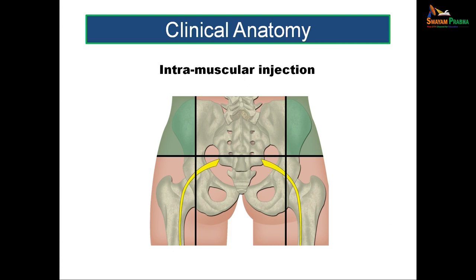When giving intramuscular injections in the gluteal region, the most important thing is to safeguard the sciatic nerve. The safest area is the upper lateral quadrant of the gluteal region, where the muscle used is gluteus medius. Because the sciatic nerve curves downwards and laterally and lies in relation to the inferomedial and lateral quadrants, those quadrants are avoided. The superior lateral quadrant, with the gluteus medius lying deep to the gluteal aponeurosis, is the preferred injection site.